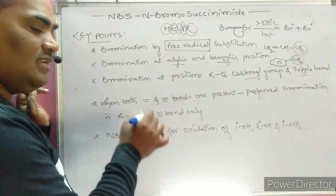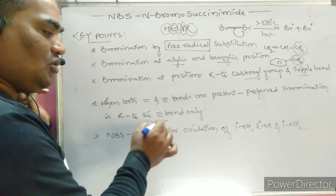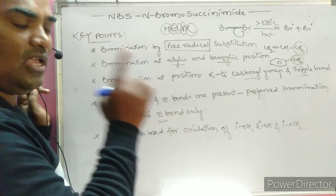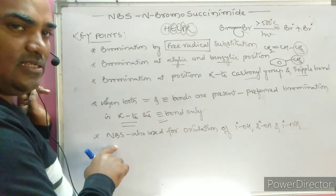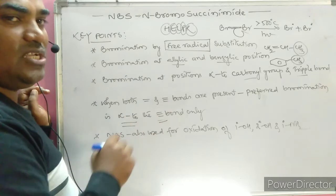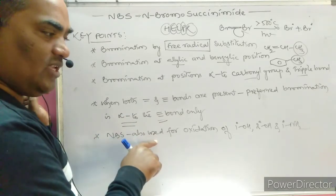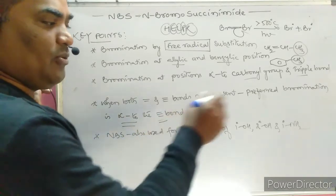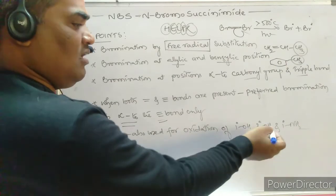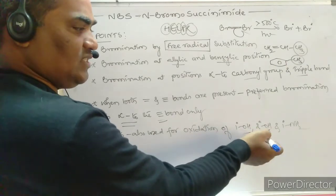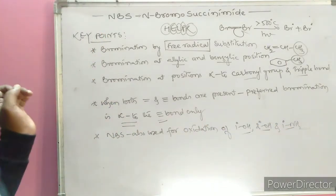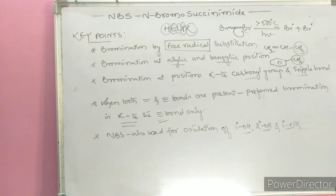When both a double bond and triple bond are present in a compound, bromination preferentially occurs at the alpha position relative to the triple bond. Also importantly, NBS is not limited to allylic and benzylic bromination — it also has the characteristic property of oxidizing primary alcohols, secondary alcohols, and primary amines.